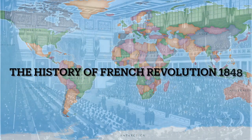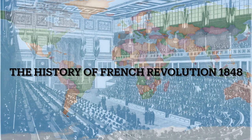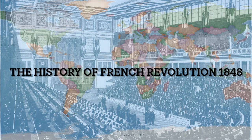The French Revolution of 1848, also known as the February Revolution, was a period of intense political and social upheaval in France. It emerged as a response to economic hardships, social inequality, and political discontent. Here is a detailed overview of the history of the French Revolution of 1848.